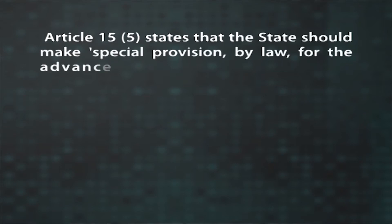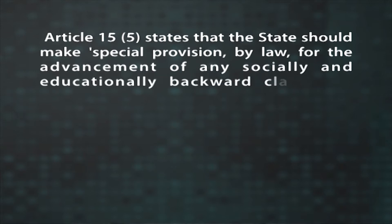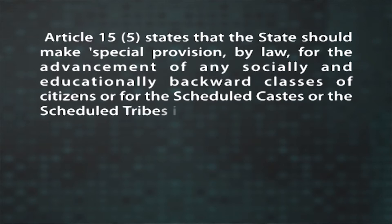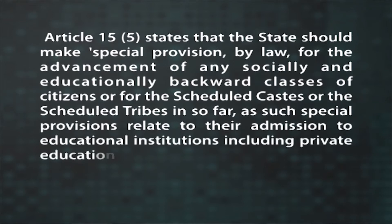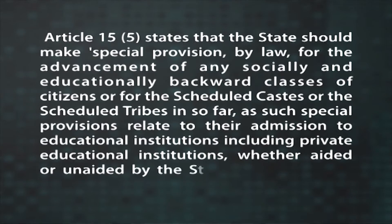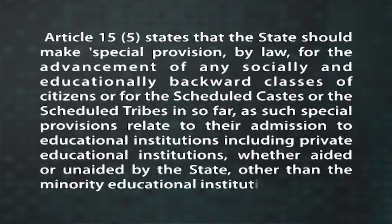But the term backward classes has not been defined in the constitution of India. Therefore, it is difficult to measure the backwardness of these people using a uniform criterion. Even at the time of drafting of the constitution, the definition of the term remained imprecise. Though difficult to define, the term can be measured in terms of low levels of income, the extent of illiteracy and the low standard of life demonstrated by living conditions. Article 15(5) states that the state should make special provision by law for the advancement of any socially and educationally backward classes of citizens or for the Scheduled Castes or the Scheduled Tribes, in so far as such special provisions relate to their admission to educational institutions, including private educational institutions, whether aided or unaided by the state, other than minority educational institutions.